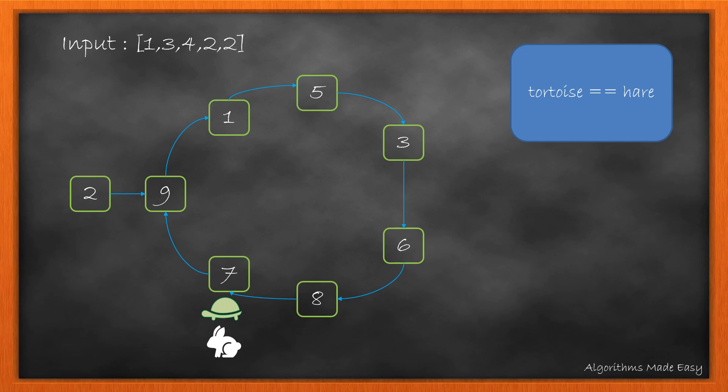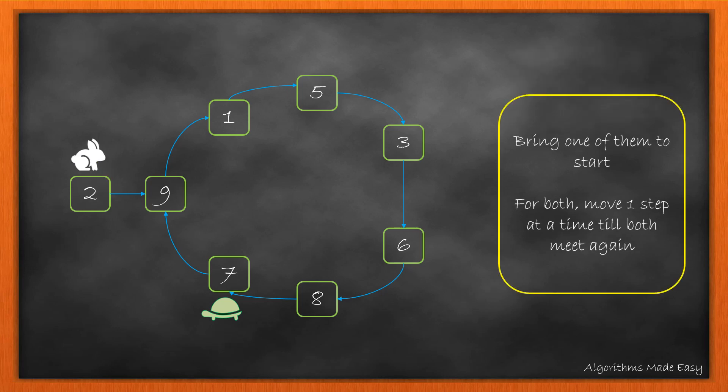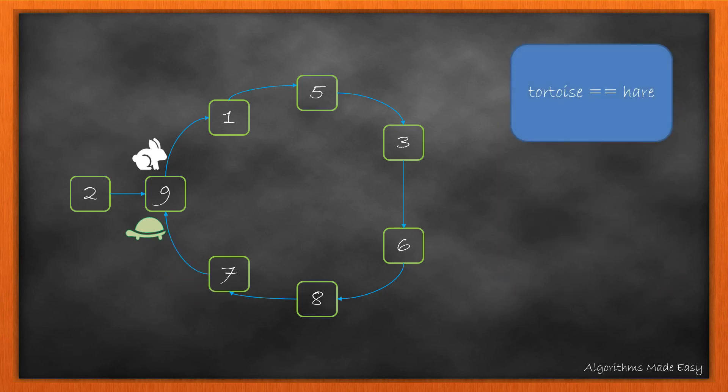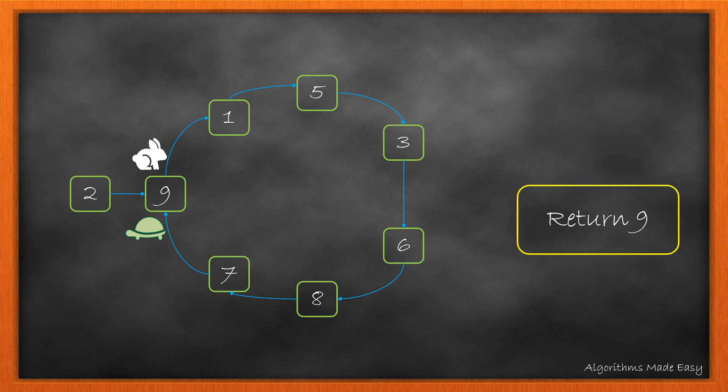Here, we can see that hare and tortoise are at the same position, so we have come to the end of phase 1. Now, we will move any one of them to the start. This time, we will move them at a constant speed of one step and stop when they meet again. As they both are again at the same position, our looping condition will break and we will return the element, which in this case is 9.